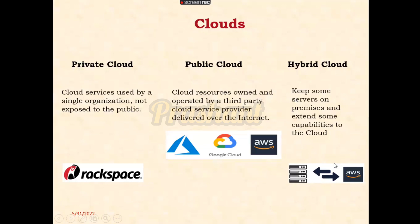In the hybrid cloud, the companies use AWS services, but to store the data, they use their own on-premises data centers. The data center or server will be in their own premises, connected to AWS. So they use the AWS services but they store the data into the on-premises data center.